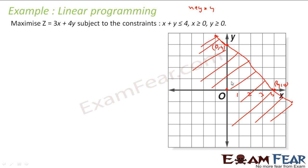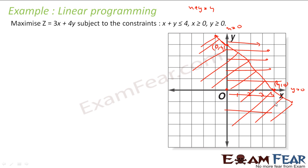Next is x greater than 0. x equal to 0 is this line, and x greater than 0 — you take a test point, it satisfies, so my x greater than 0 is this area. Third is y greater than 0. y equal to 0 is this line. For y greater than 0, let us take a point like y equals minus 3: minus 3 is not greater than 0, it does not satisfy. That means I am looking for this area.